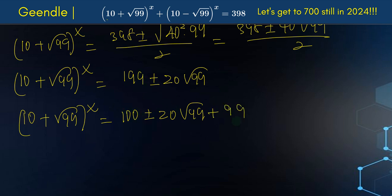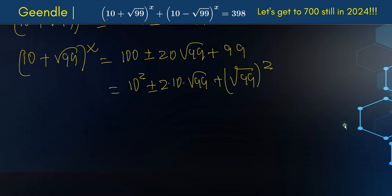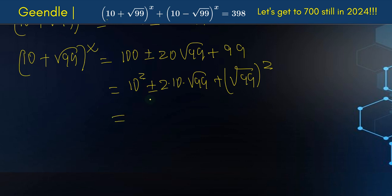So if 100 is 10² and we have ± 20√99, which is 2 × 10 × √99, and then plus (√99)², you can see clearly we have a perfect square — two perfect squares actually. So this is (10 ± √99)², meaning (10 + √99)^x = (10 ± √99)².